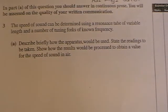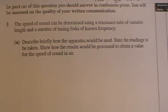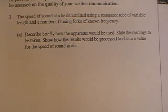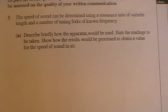The speed of sound can be determined using a resonance tube of variable length and a number of tuning forks of different frequency. Describe briefly how the apparatus would be used, state the readings to be taken, show how the results would be processed to obtain a value for the speed of sound in air.